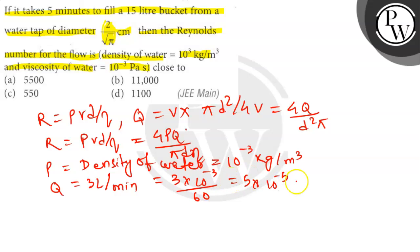D is 2/√π × 10⁻² meter, which is 1.125 × 10⁻² meter, and η is 10⁻³ Pa·s.